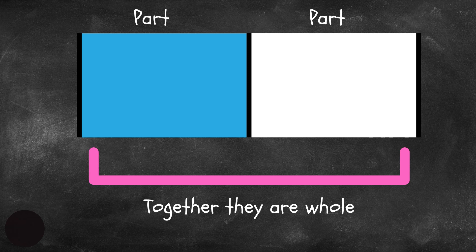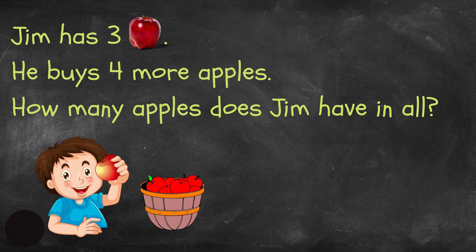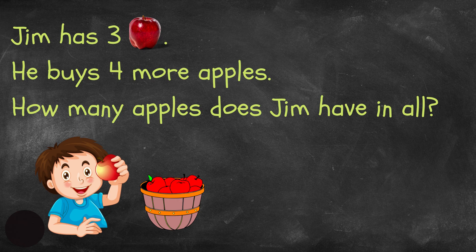So here's an example of a word problem that we are going to think about together and use a bar model to answer. Jim has three apples. He buys four more apples. How many apples does Jim have in all?